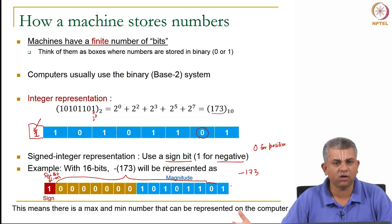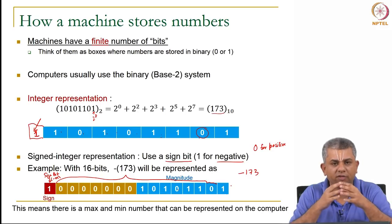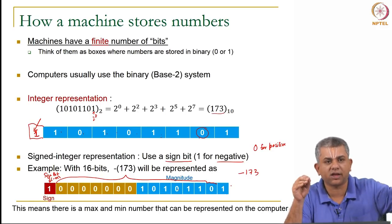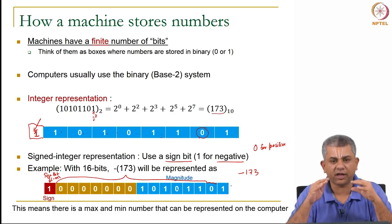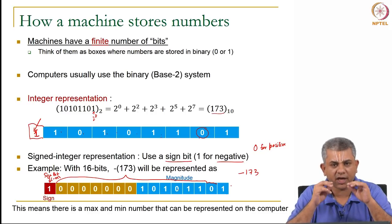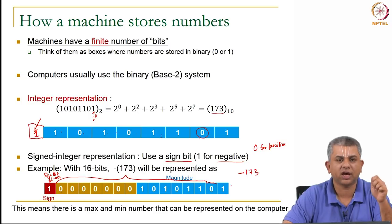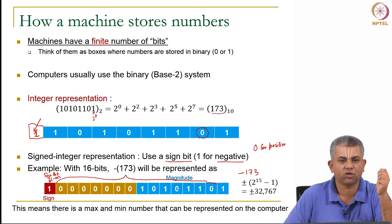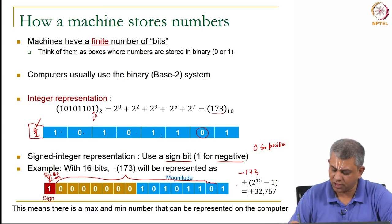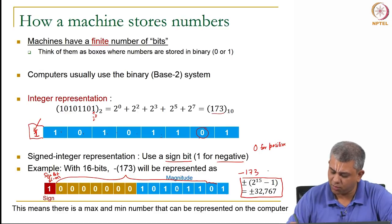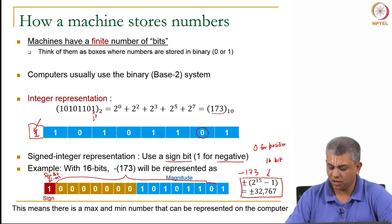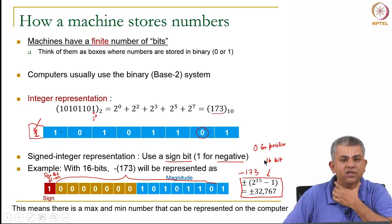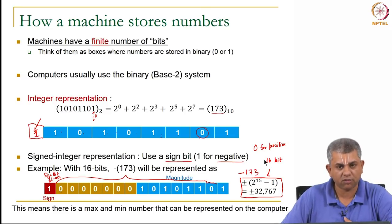This is similar to a calculator — if you have a calculator with 8 digits, you cannot store a number greater than 8 digits. The main point to take away is that there is a maximum number the machine can store accurately and also a minimum number. For a 16-bit representation, one bit is used for sign, leaving 15, so you can represent 2^15 minus 1, which is approximately plus or minus 32,000. Similarly increasing to 32-bit gives 2^31 minus 1.